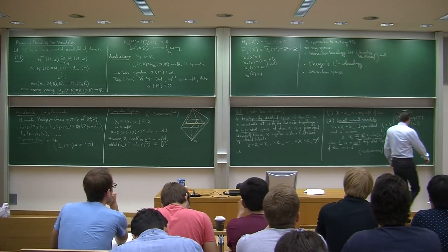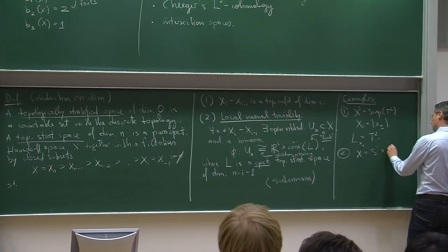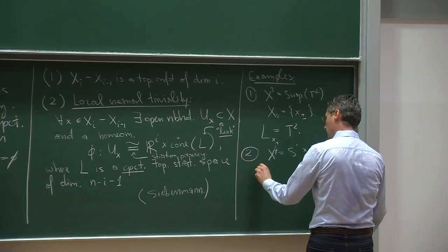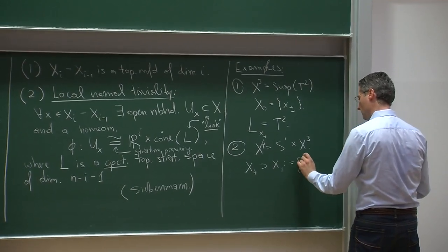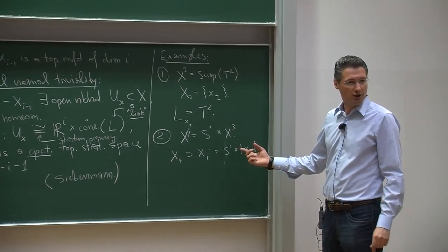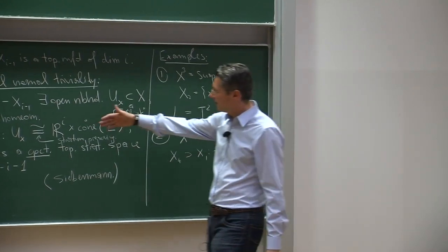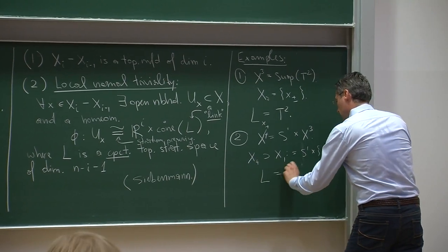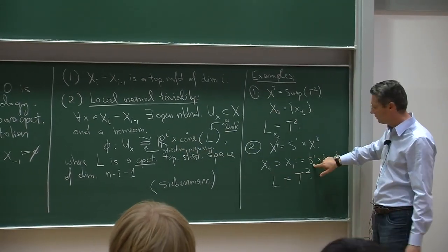For a more interesting stratum, you could take the previous example and cross it with a circle S¹. Then you would have X_4 ⊇ X_1, where X_1 = S¹ × {x⁺, x⁻}. Notice that the link doesn't change — it is still T², because the Euclidean directions are taken outside of the cone. So here the link is still T² and the i-value is 1, coming from the S¹ direction.